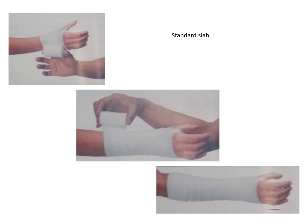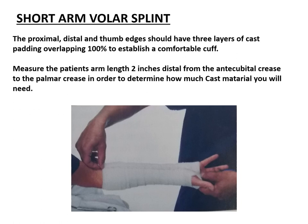In my hands I prefer to use Elastoform with Elastoplast around that. Here is an example of how to do the standard slab: first rolling on the undercast padding, then applying the short volar splint on the volar side of the forearm and into the hand — from two inches distal to the antecubital crease to the distal palmar crease. This should be measured and pre-prepared. The proximal, distal, and thumb edges should have at least three layers of padding overlapping 100% to make sure there is a comfortable cuff when the slab is applied.